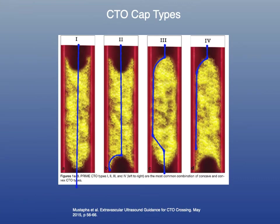Let's talk about cap morphology or CTO cap types. In a paper by Mustafa and his team, they analyzed various CTOs and described four main patterns of CTO cap morphology. With a type 1 cap, your catheter and guide wire will start intraluminal when you begin recanalization. With type 3 and 4, the catheter and guide wire will most likely hit the apex of the CTO cap, slide off to the side, and you'll begin a subintimal recanalization — requiring catheters, guide wires, or re-entry devices to achieve intraluminal access more distally.